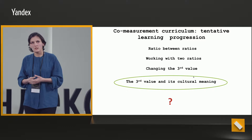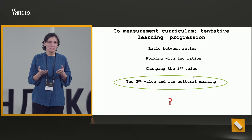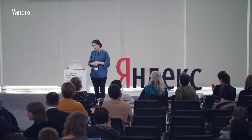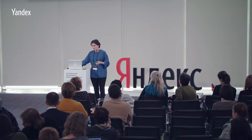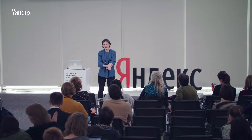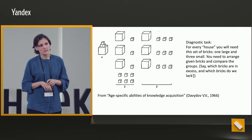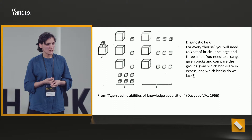At the end of that, children must form a ratio between ratios — that is, how deep will an ice cube submerge if the water has some salt content in it. In Davidov's book, called 'Eight Specific Abilities of Knowledge Acquisition,' there was this topic of getting certain sets. There is a ratio between various values, and there was this diagnostic task: for every house you need a set of bricks — one large and three small bricks.